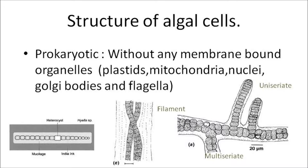The morphology, or outer appearance, in cyanobacteria is very simple. Unicells could be free-living or enclosed within a mucilaginous envelope. Subsequent evolution led to the formation of a row of cells called a trichome. If we exclude the mucilage part in the first image, what remains is a trichome. When the trichome is surrounded by a sheath or mucilaginous sheath, it is called a filament, and it is possible that more than one trichome is present in a filament. Branching of the filament causes complexity in morphology.